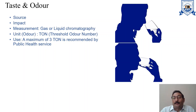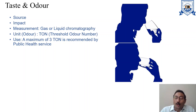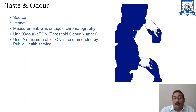The next parameter is taste and odor. The source of taste and odor comes from substances with which water comes into contact in nature or during human use. These may include minerals, metals, salts from the soil, products from biological reactions, and constituents of wastewater.